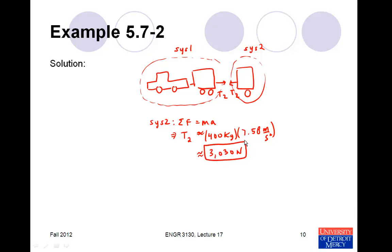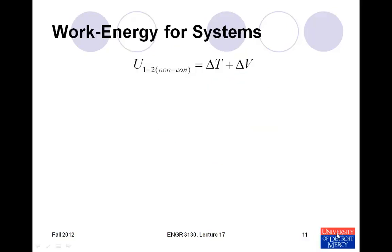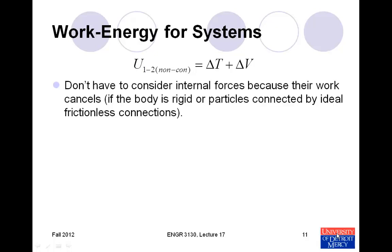This example illustrates how we may want to define our system differently — either to keep forces internal so they cancel, or to expose internal forces so we can solve for them. We will now look at work-energy for systems of particles. The work-energy balance uses the same expression as for individual particles, and just as with Newtonian mechanics, by defining our system to include multiple particles, we can often neglect internal forces because their work cancels — particularly if the body is rigid or connected by ideal frictionless connections.